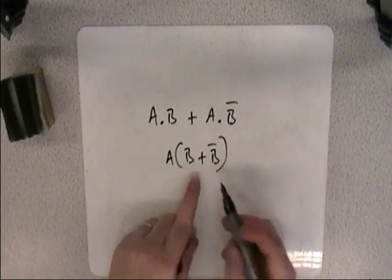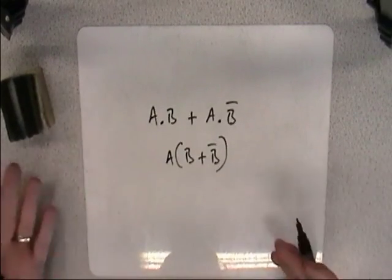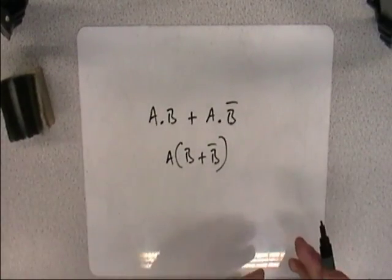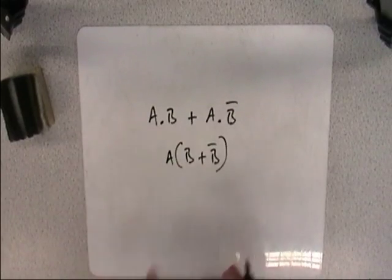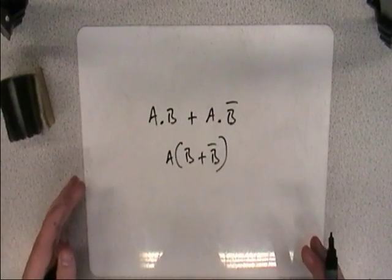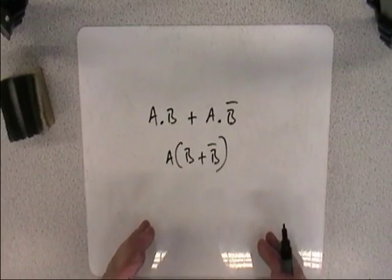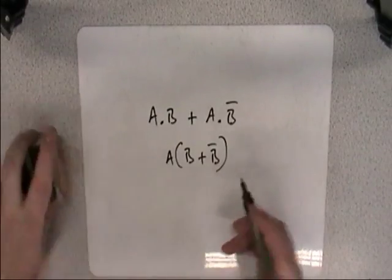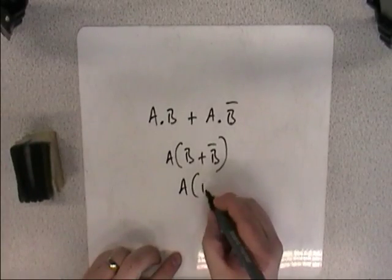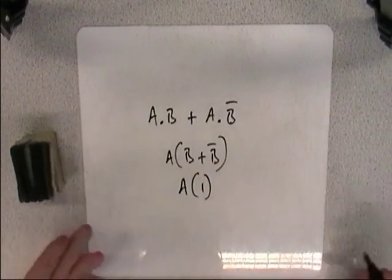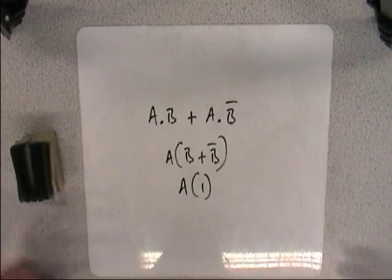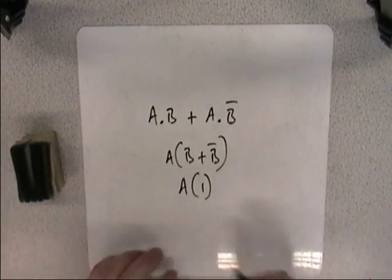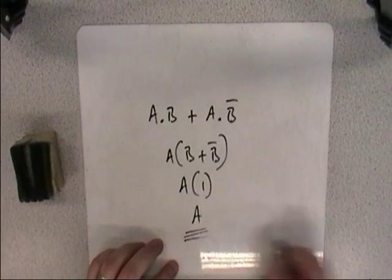And B or NOT B is always true. It's either B or it's NOT B. If the question is, is it B or NOT B, the answer is yes. If I say, are you male or female, the answer is yes, you are either male or female. And so we can rewrite this as A times 1. A times 1 is just A, because anything times 1 is just itself. So the answer is A.